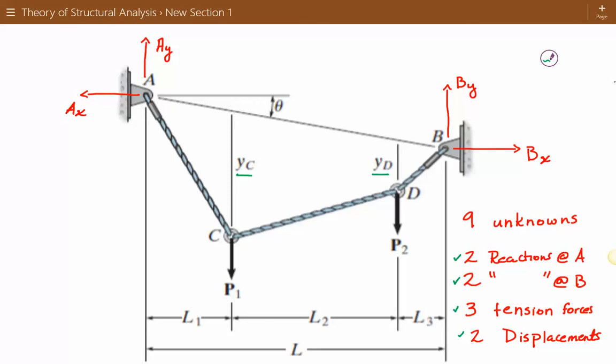For the ninth equation, we need to derive some relationship, some geometric relationship that we can use. So that way we'll have nine unknowns and nine equations.